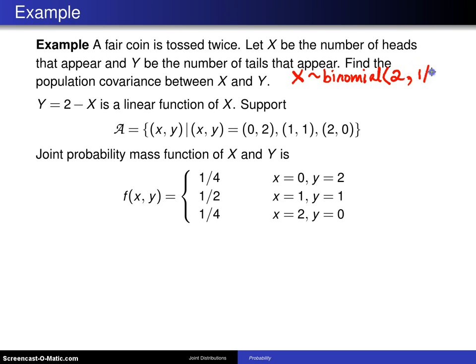And the probability of getting a head is one half. The expected value of X, which I'll indicate here as mu sub X, will be n times p, and 2 times one half gives you 1.